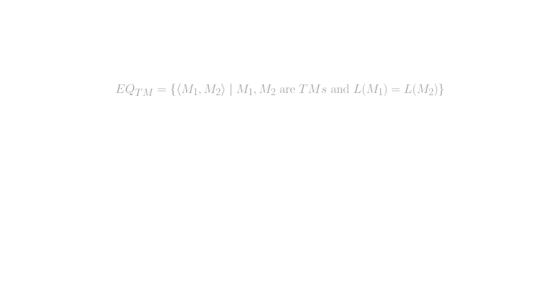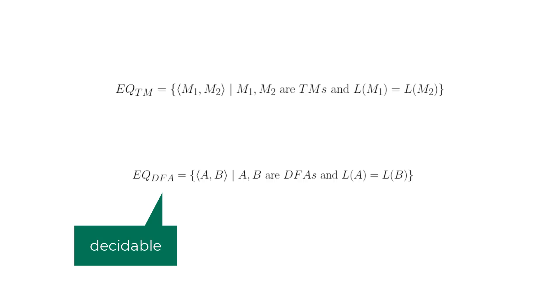Let's look at the language of EQTM. The strings in this language are pairs of machine descriptions whose languages are equivalent. This should ring bells about the EQDFA language where the strings are pairs of DFA descriptions. EQDFA was proved to be a decidable language, but turns out EQTM, which contains Turing machine pairs whose language is equivalent, is an undecidable language.